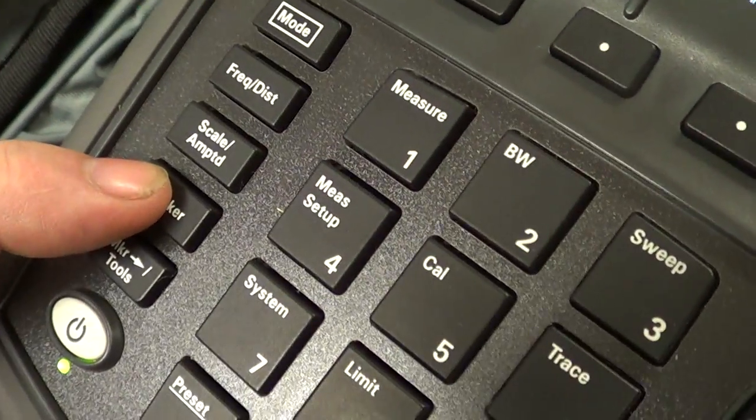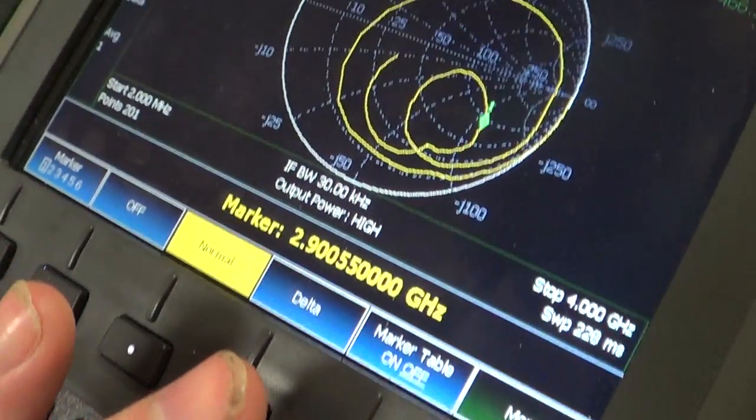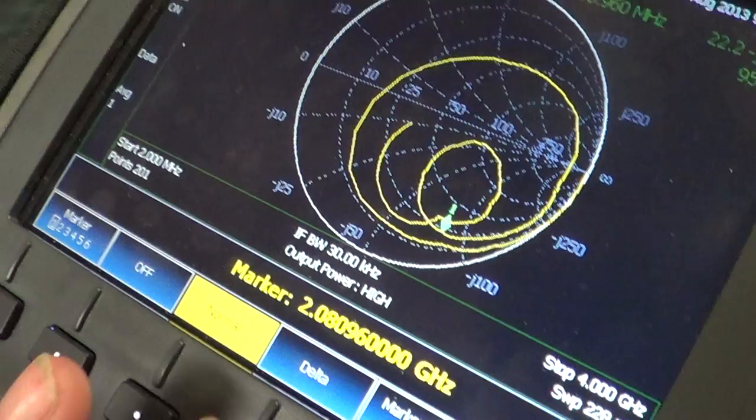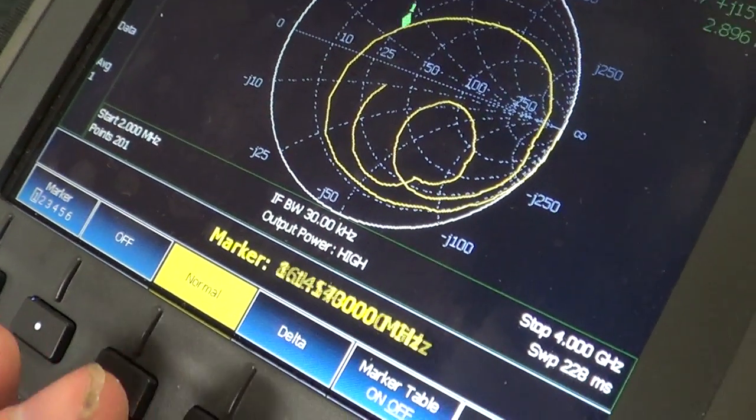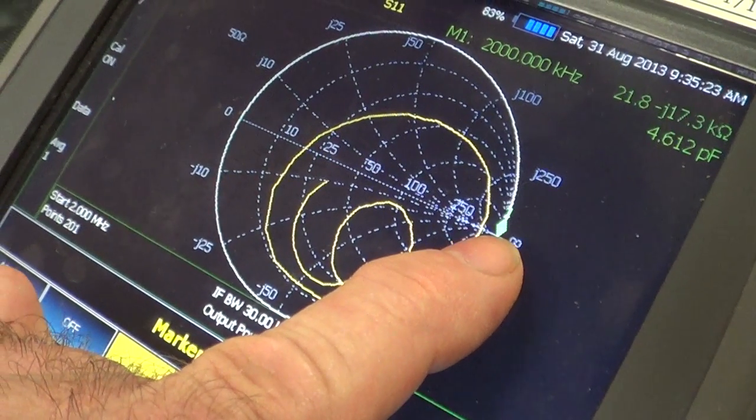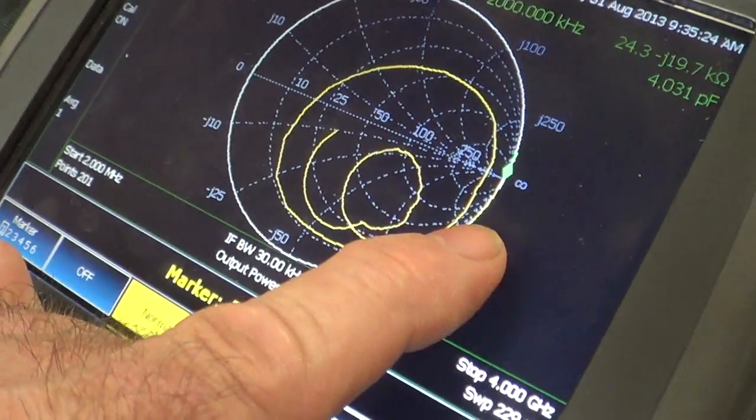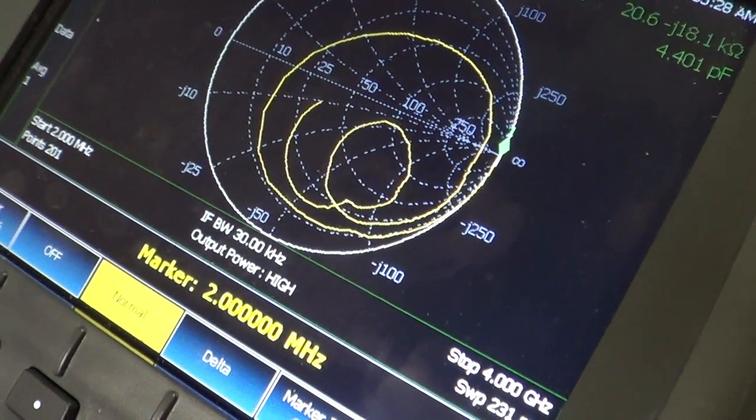I'm going to click on the marker button and then move the cursor around. Okay, here's at zero DC, and when you advance the frequency you go clockwise around the Smith chart.